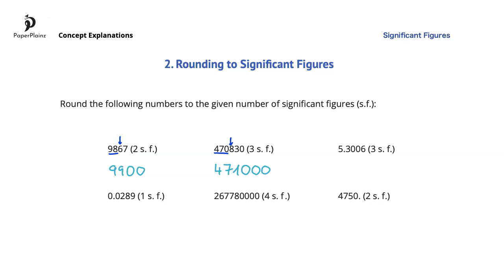The first three significant figures in the next number are 5, 3 and 0. We have to round based on the other zero, so we will leave the zero after the 3 as it is, and get 5.30. Remember that a zero after the decimal point at the end of the number is a significant figure, so this number now has three significant figures. The first significant figure in the next number is 2, so we have to round based on the 8 — round up — which gives us 0.03.